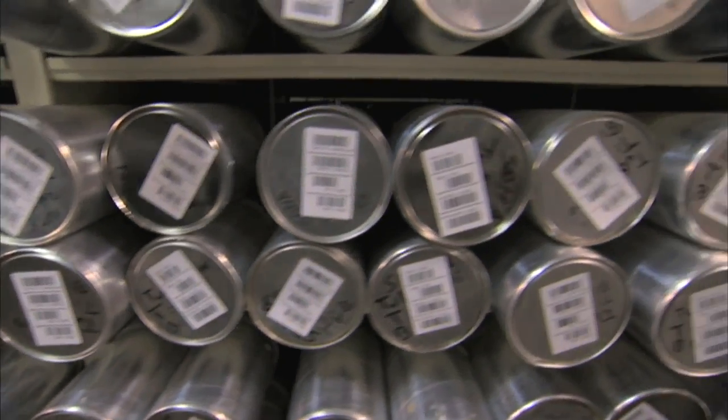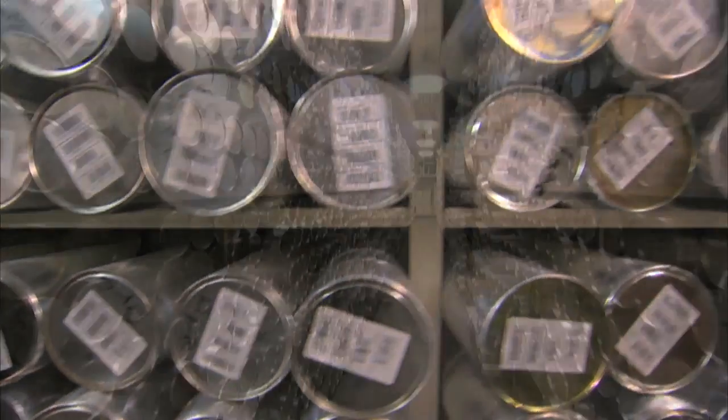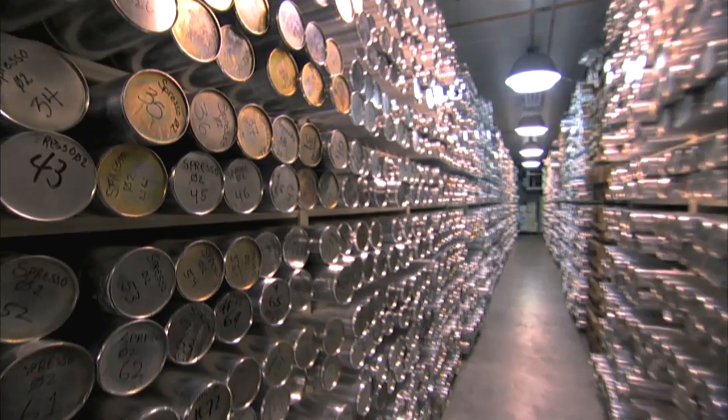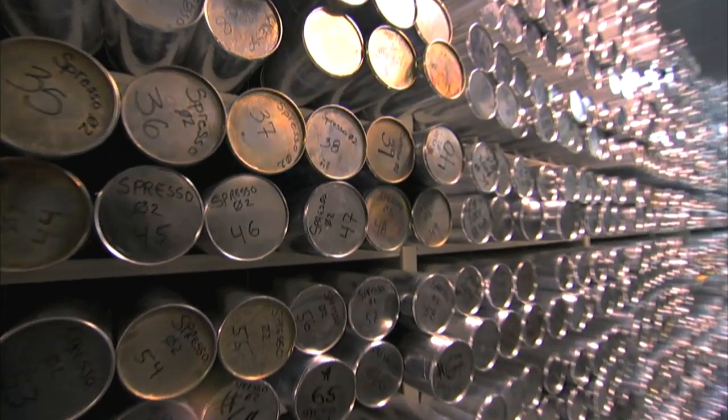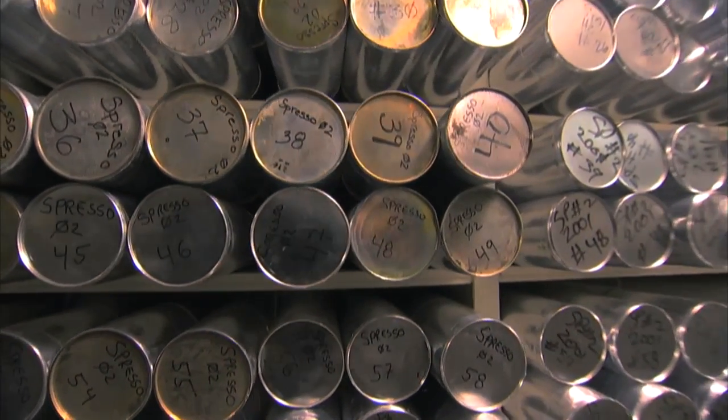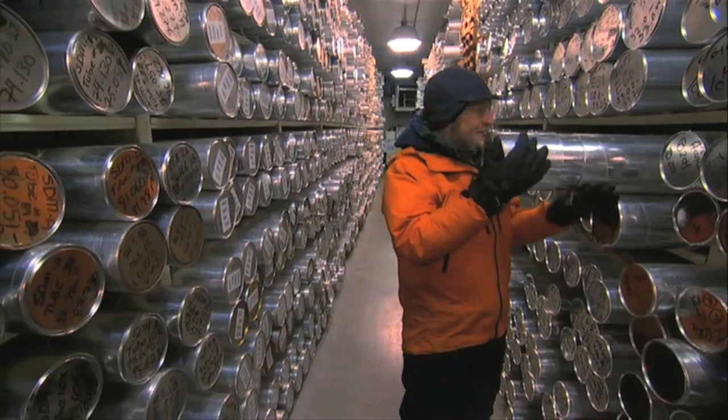The oldest core here goes back some 400,000 years. Here, really ancient ice from Greenland in the north and Antarctica in the south reveals Earth's climate history.